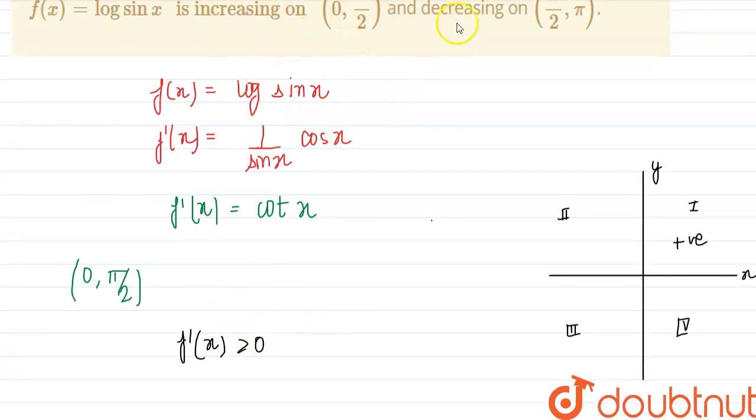So this is proved. Now for decreasing from π/2 to π, see for π/2 to π, this is 0, this is π/2, this is π. So for π/2 to π,